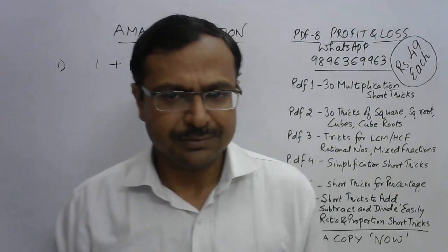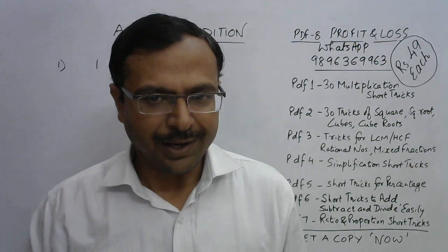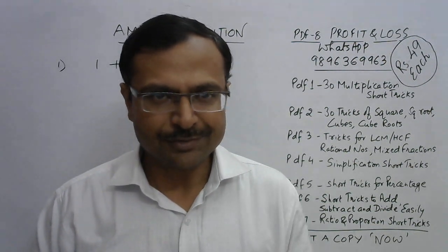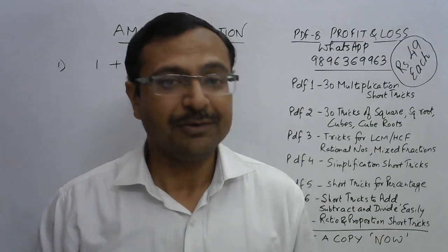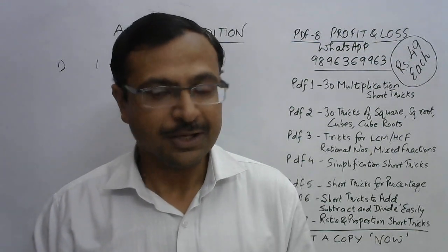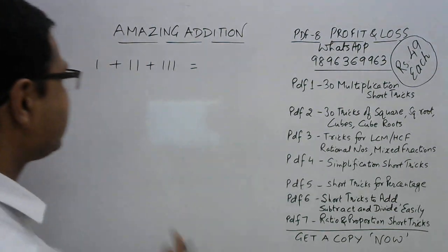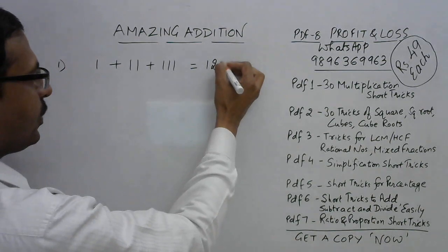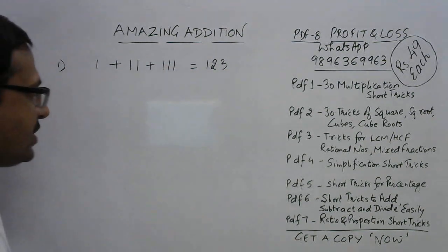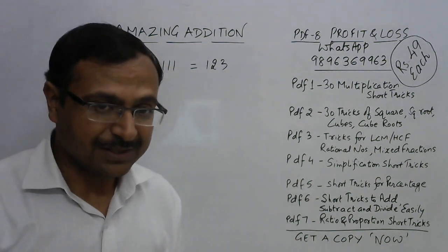We all know the sum of these three numbers but how do we find it orally without use of pen and paper in a matter of just three seconds? Yes, that's the speed required if you want to succeed in competitions. You can see 1, 11, and 111. These are three numbers so just try 1-2-3 and you get your answer for this particular question.